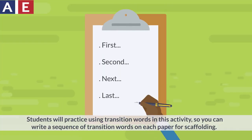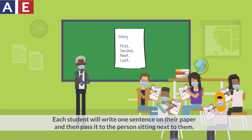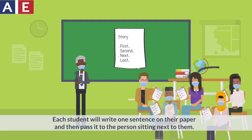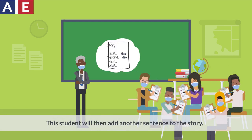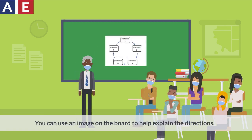Students will practice using transition words in this activity, so you can write a sequence of transition words on each paper for scaffolding. Explain that each group will work together to write stories on their pieces of paper. Each student will write one sentence on their paper and then pass it to the person sitting next to them. This student will then add another sentence to the story. You can use an image on the board to help explain the directions.